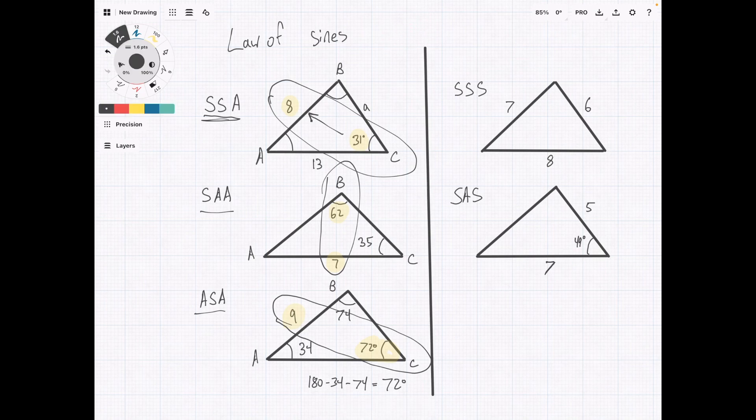On the left here, no matter what we do, we're always going to be missing a pair. Like for example, the side, side, side problem, there is no combination. There's no combination that has both values. So in that case, we're going to need the law of cosines.